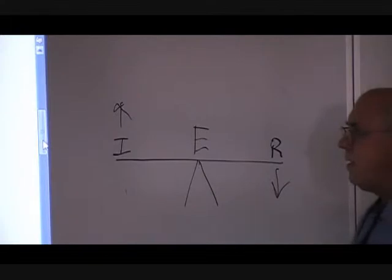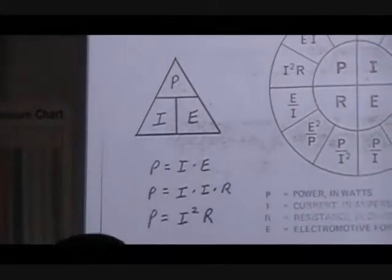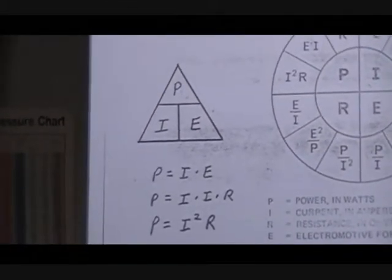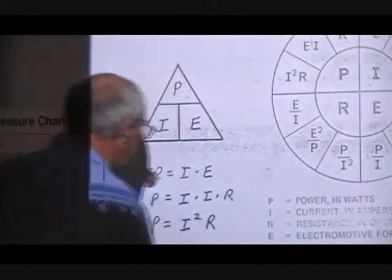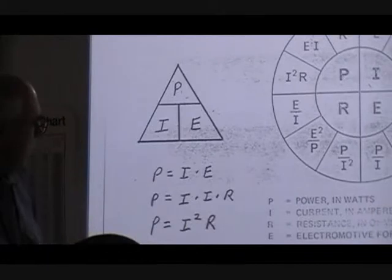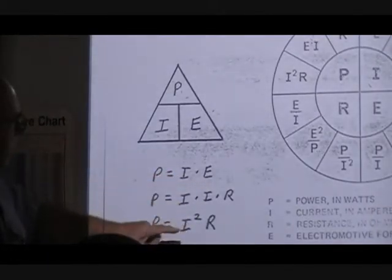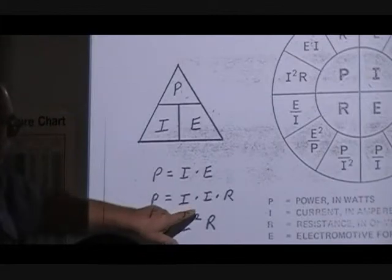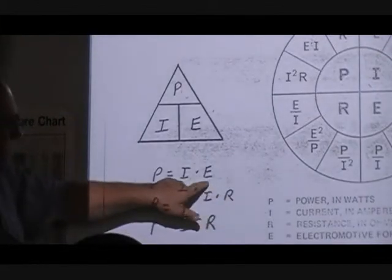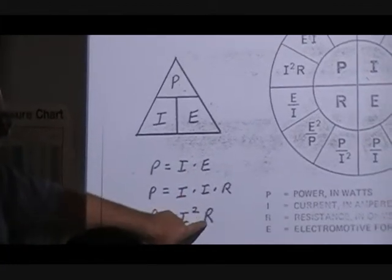If we go to the P, which is power, we can find out that that is equal to I times E. To break it down to make it look a little easier than this big circle, we know that E is equal to I times R. If we don't have E, we can take I times R and put it in its place of E. And when we compound or put this together, we find out that is equal to I squared R.